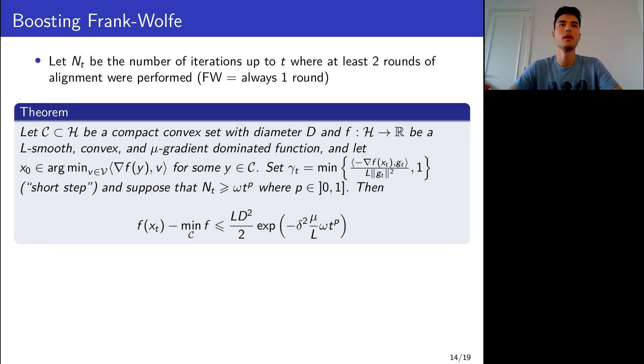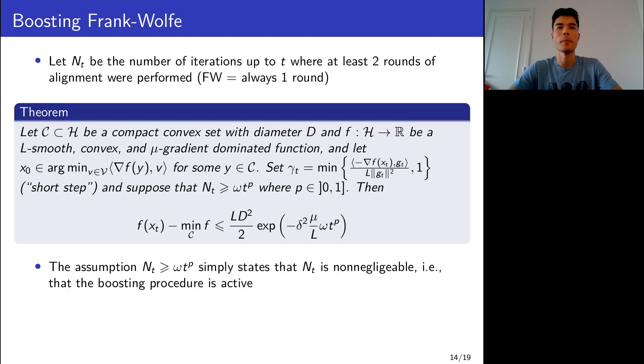First, the convergence rate. I denote by n_t the number of iterations up to t, where at least two rounds of alignment were performed. Remember that if I do only one round, then I'm just doing Frank-Wolfe because I haven't tried to increase the alignment. If I do two rounds, I've already tried to increase it a little bit. So I'm just looking at the scenario where Boosted Frank-Wolfe is used. In this case, I have this near linear convergence rate. The assumption is simply to state that this n_t is non-negligible. If it is negligible, it means that almost every iteration does only one round of alignment.